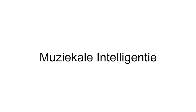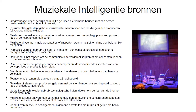Hoe gebruiken we muzikale intelligentie in de klas? Om muzikale intelligentie te bevorderen, kunnen we verschillende soorten activiteiten uitvoeren. Denk aan omgevings- en instrumentale geluiden, muzikale composities en uitvoeringen, percussie, rap. We kunnen ook activiteiten voorstellen zoals zingen, neuriën, een muzikale collage maken. Natuurlijk kunnen we ook technologie gebruiken om andere bronnen te ondersteunen. Kortom, activiteiten die muziek of geluid als basis gebruiken.